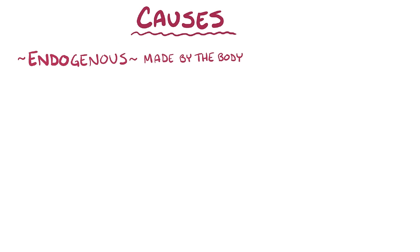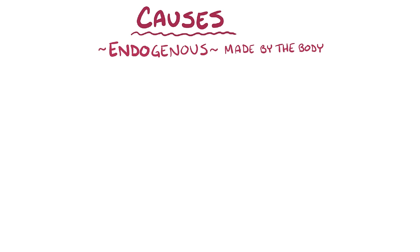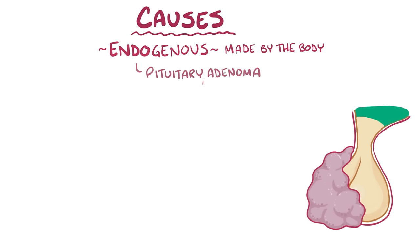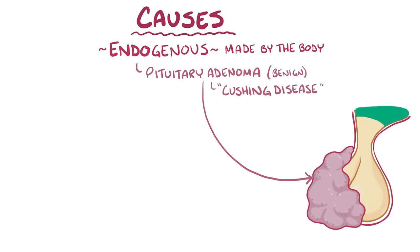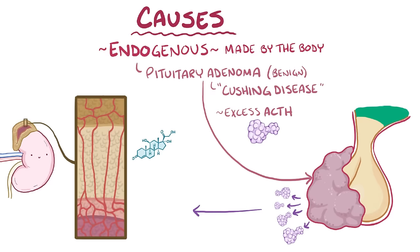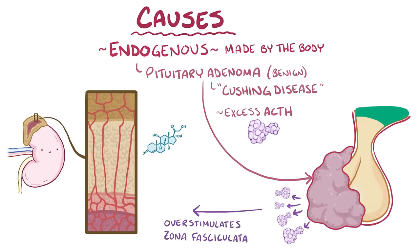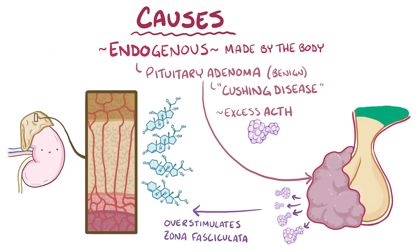Cushing syndrome can also result from increased levels of endogenous cortisol. The most common reason is excess ACTH, and the leading cause of that is a pituitary adenoma—a benign tumor of the pituitary gland—and this specific condition is called Cushing disease. Unlike a malignant tumor, the cells don't invade neighboring tissues or spread to other parts of the body. Instead, the pituitary adenoma simply grows in size and secretes too much ACTH, overstimulating the zona fasciculata of both adrenal glands, which grow larger and secrete excess cortisol.